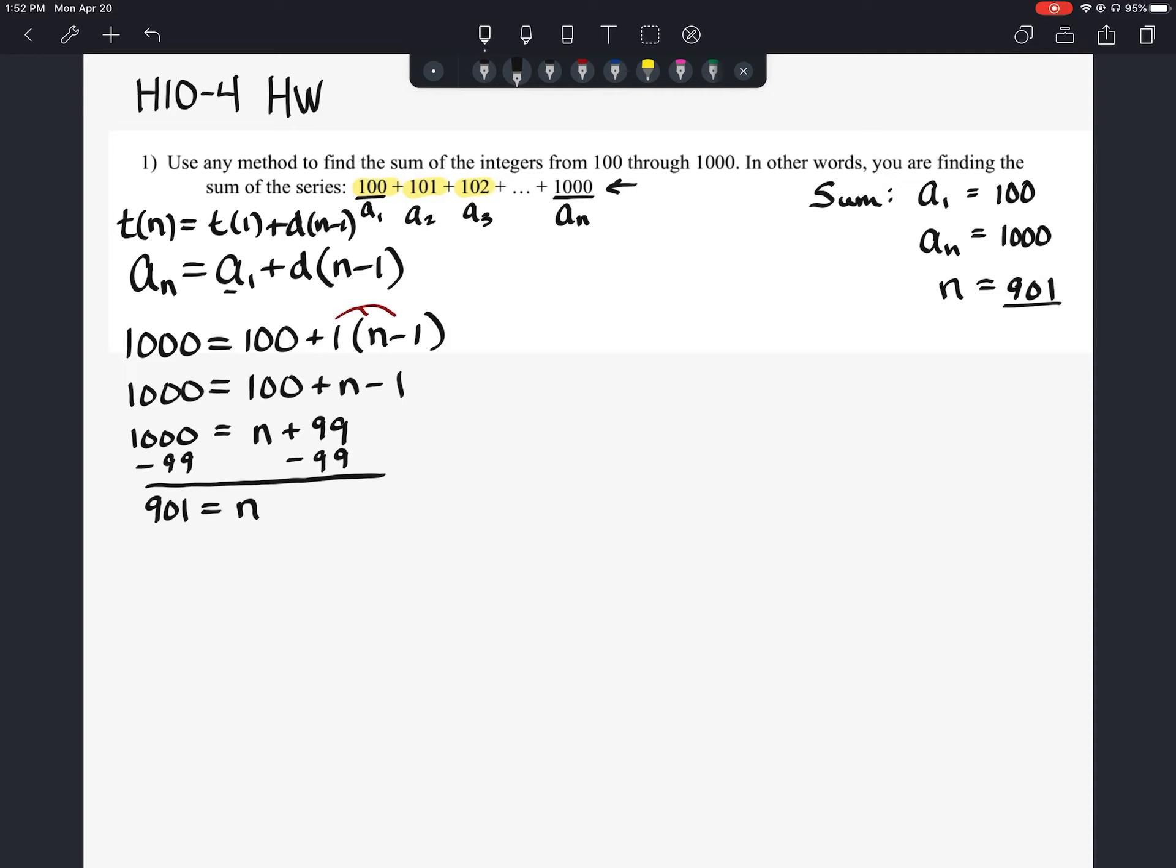And now that we have that information, you can go ahead and you can use your sum equation. Remember the sum equation, the sum of n number of terms is the number of terms is going to equal the first term plus the last term or the nth term times half the number of terms.